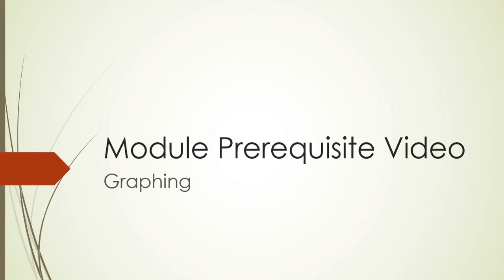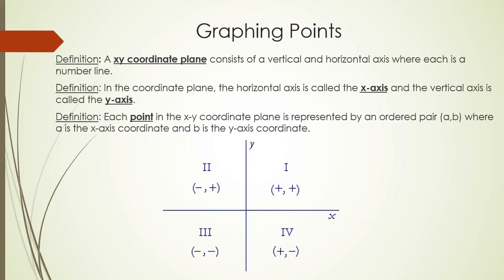This is a video about graphing. First, the xy coordinate plane. It's made from a horizontal number line called the x-axis and a vertical number line called the y-axis.